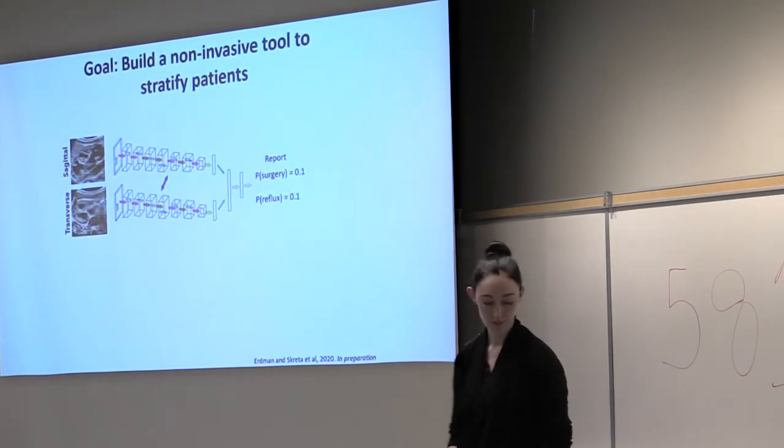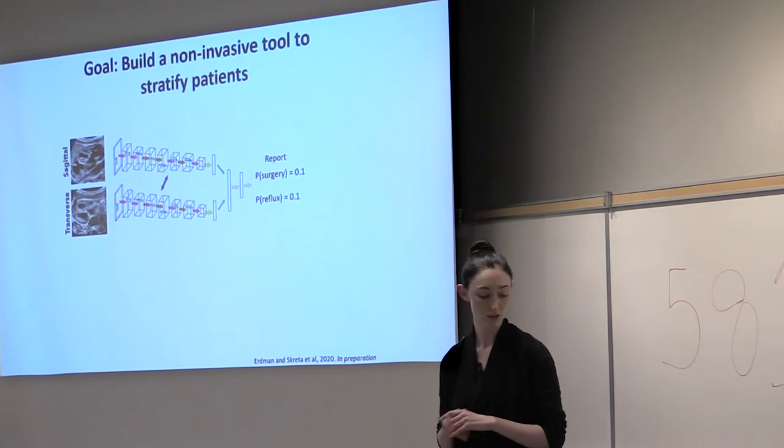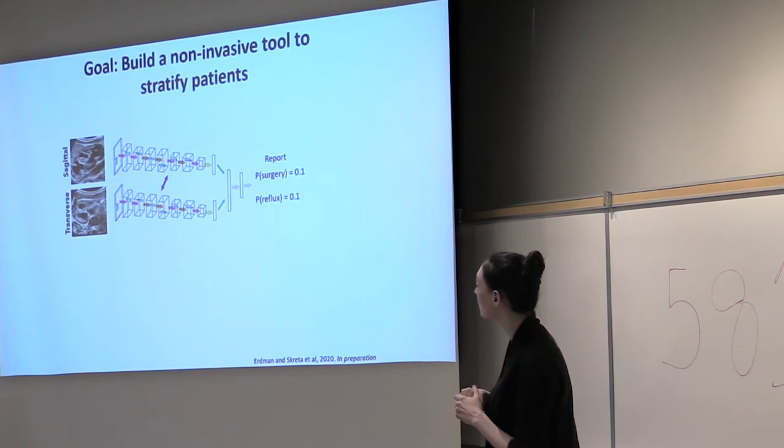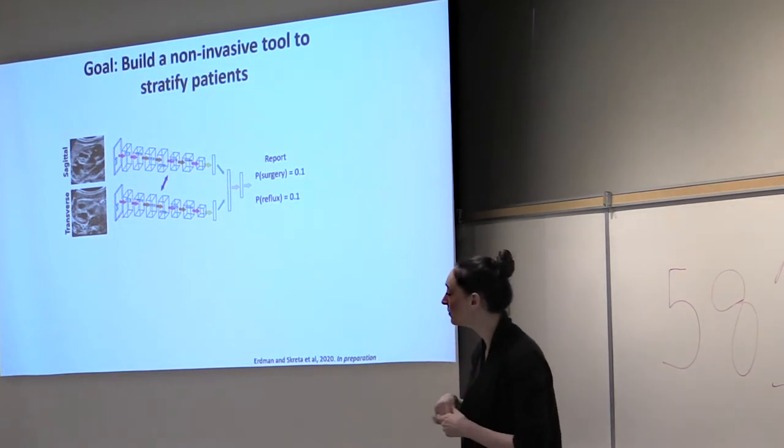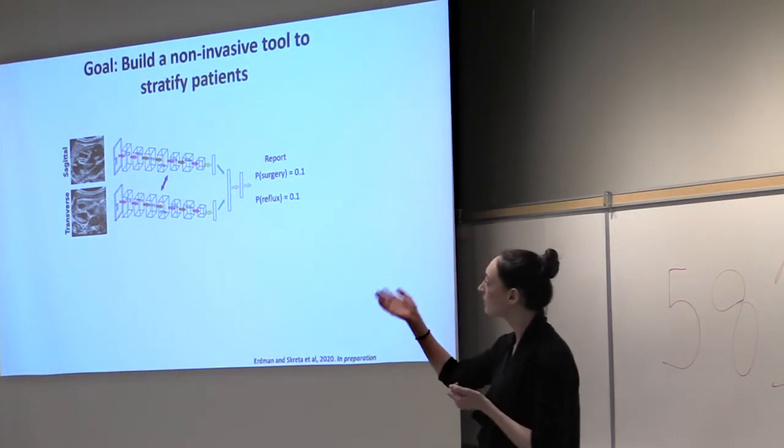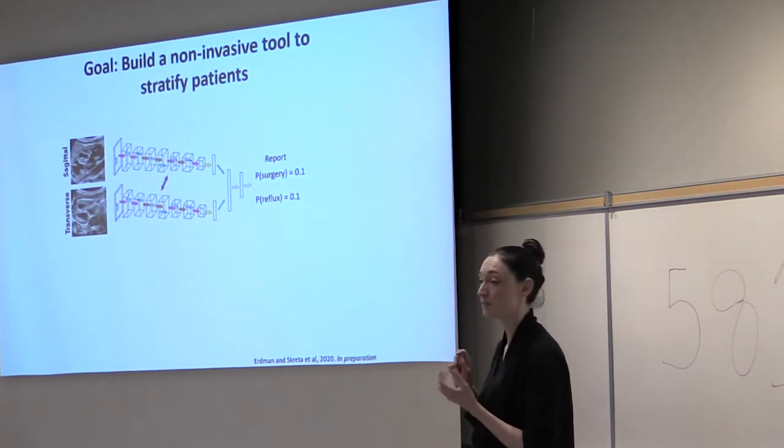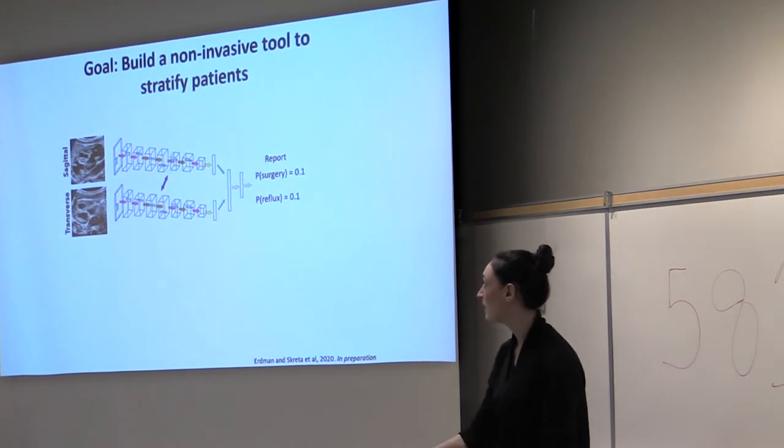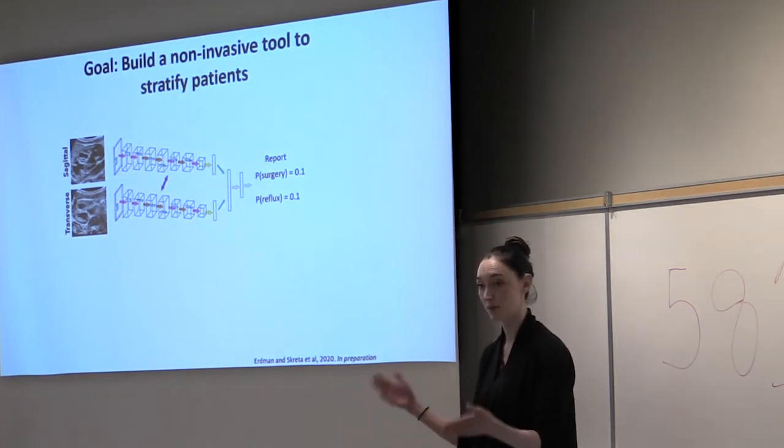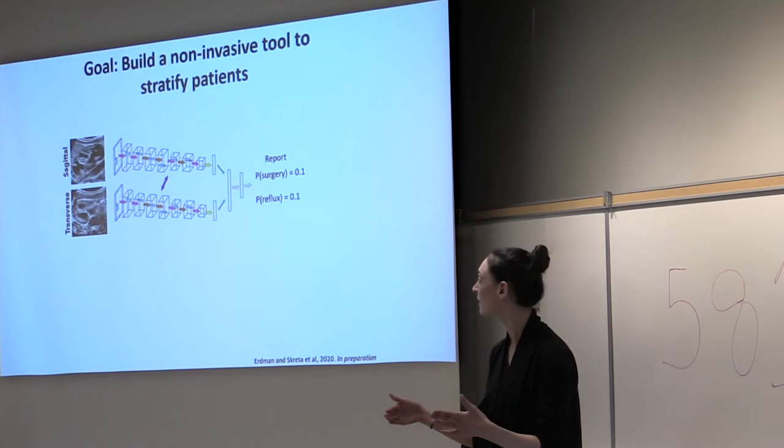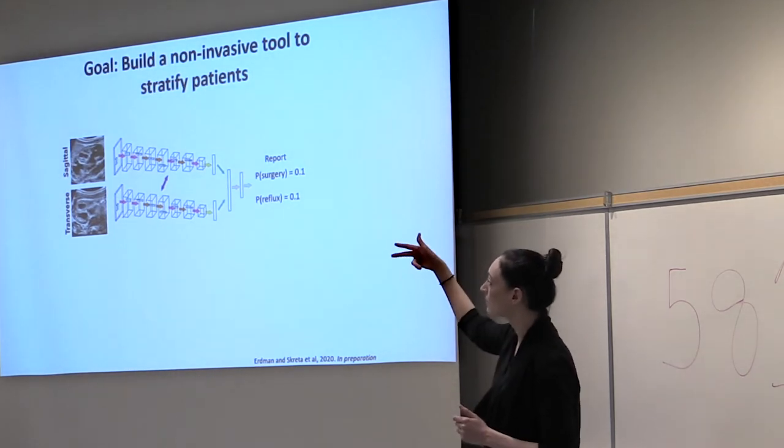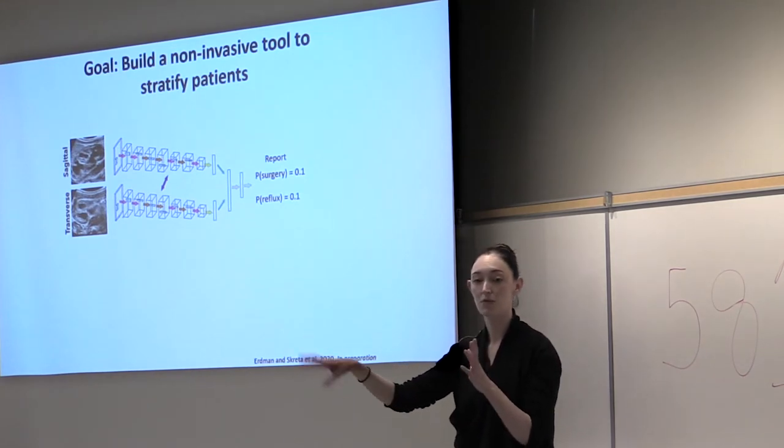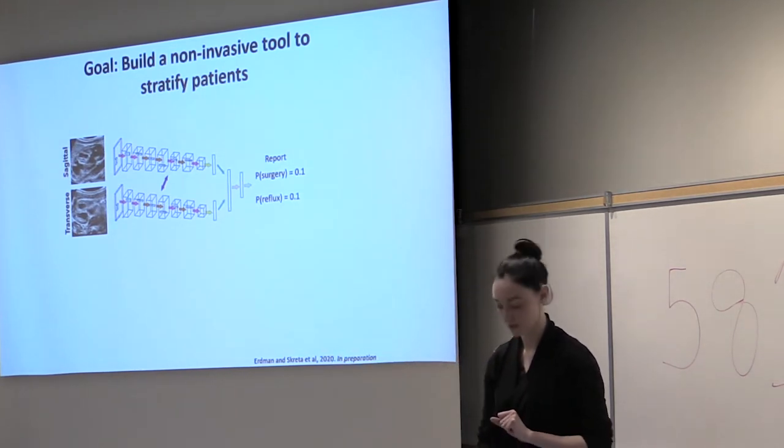One way that we did this was using a neural network. We took ultrasound stills from the full ultrasound, in particular a sagittal and a transverse view you see there, and then we built a Siamese neural network to predict the probability that that kidney would receive surgery, the probability that kidney has reflux. We looked at both kidneys, each kidney separately, and then we assessed to what degree either view is actually offering information. So we looked at a model with only one view, only sagittal, and another model with only transverse view.